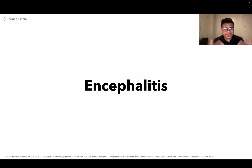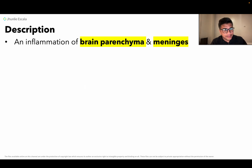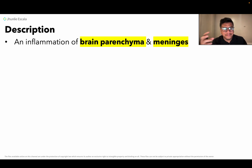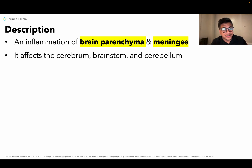Let's talk about encephalitis. When you see the suffix '-itis,' you immediately think about inflammation, and that's also true here. Encephalitis is the inflammation of the brain parenchyma and the meninges. This is not primarily the inflammation of the meninges — that would be meningitis — but rather encephalitis affects the entirety of the central nervous system, including the cerebrum, brain stem, and cerebellum.